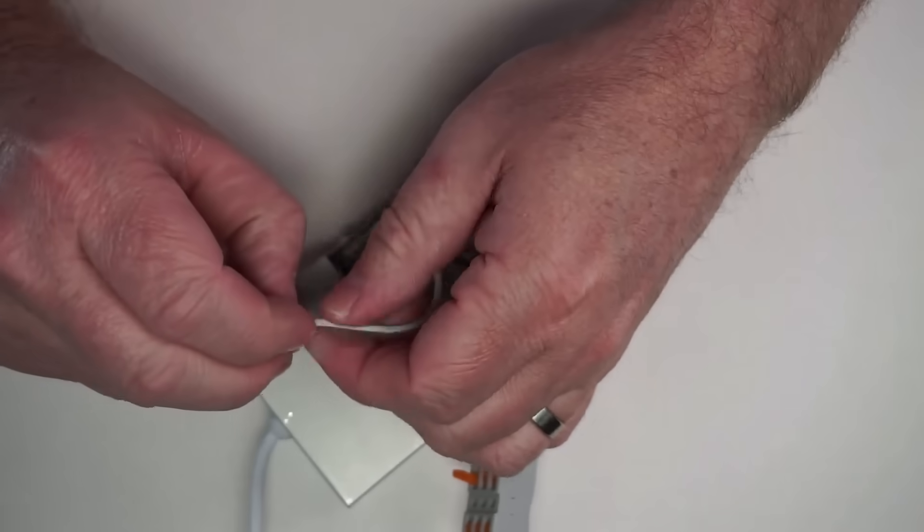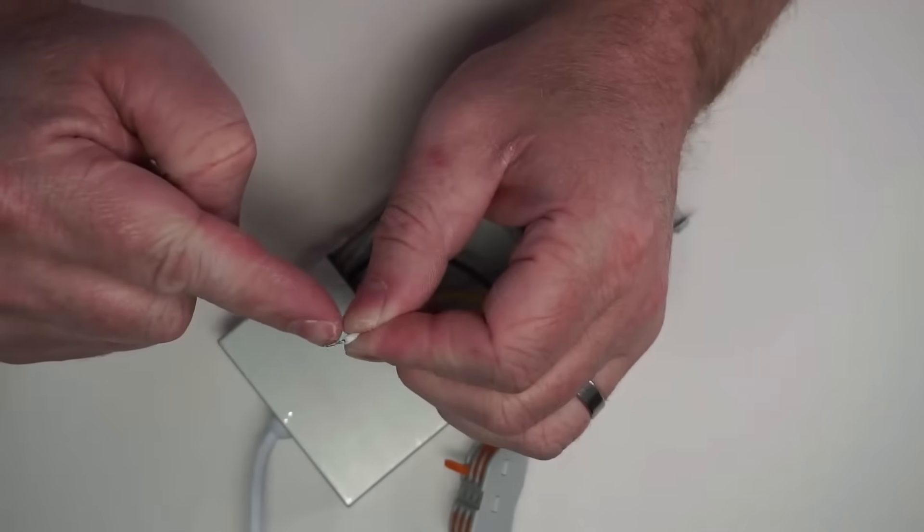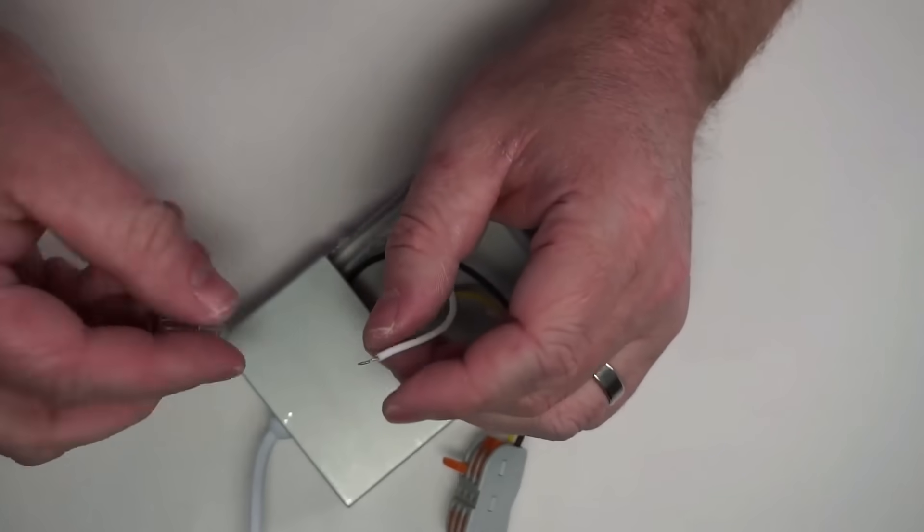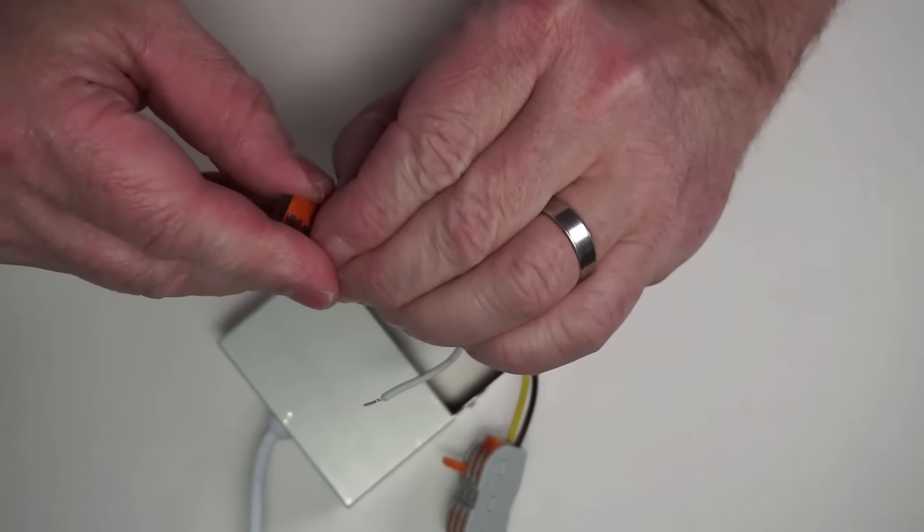We want the wire to be as straight as we can and it looks like this wire is just a tinned wire with solder, so this is not a very thick or heavy wire. Let's go ahead and put it in here.